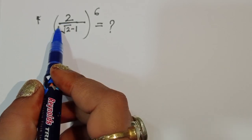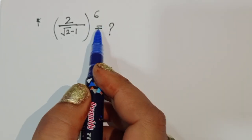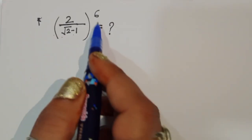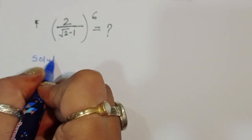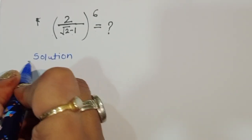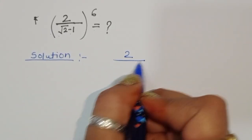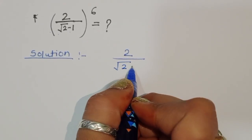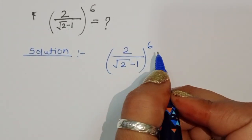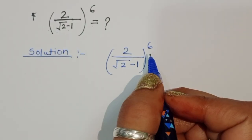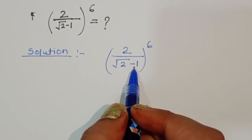We are given 2 divided by square root of 2 minus 1, to the whole power 6. We have to find out the value of this term. So let's see the solution — 2 divided by square root of 2 minus 1, to the full power 6. This is the question.